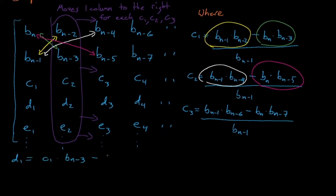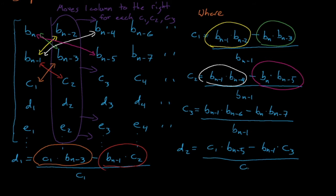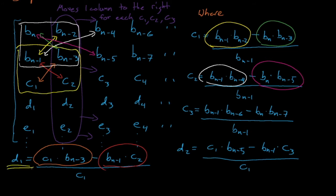The d and e coefficients, and all other necessary coefficients in our Routh matrix, are determined using the same pattern, except that the entire pattern moves down by one row for d, and then by another row for e. So d1 is equal to c1 times b n minus 3, minus b n minus 1 times c2, all divided by c1, etc. As we make some of these later rows, it's worth noting that we are allowed to add as many extra zero terms to the right of our terms in our Routh matrix if these terms are necessary to perform our diagonal multiplication math to get our Routh matrix coefficients.